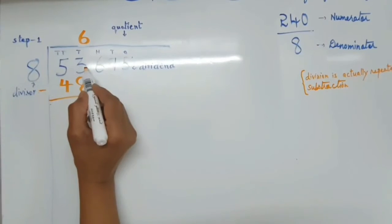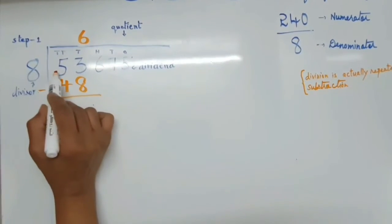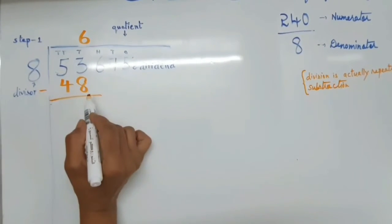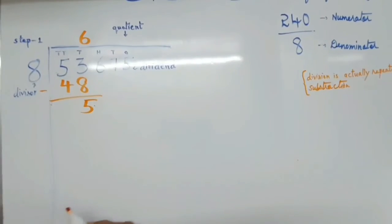So now, is it possible 3 minus 8? No. So we have to take length from 5. It becomes 13 and 13 minus 8 is equal to 5.